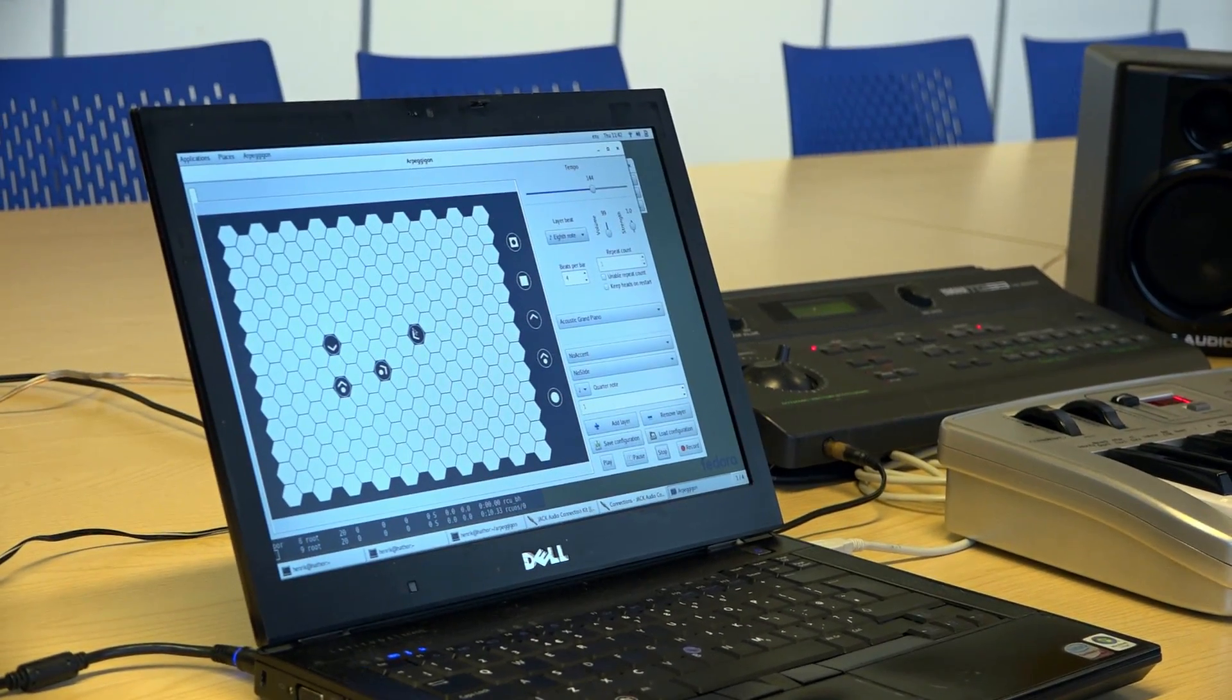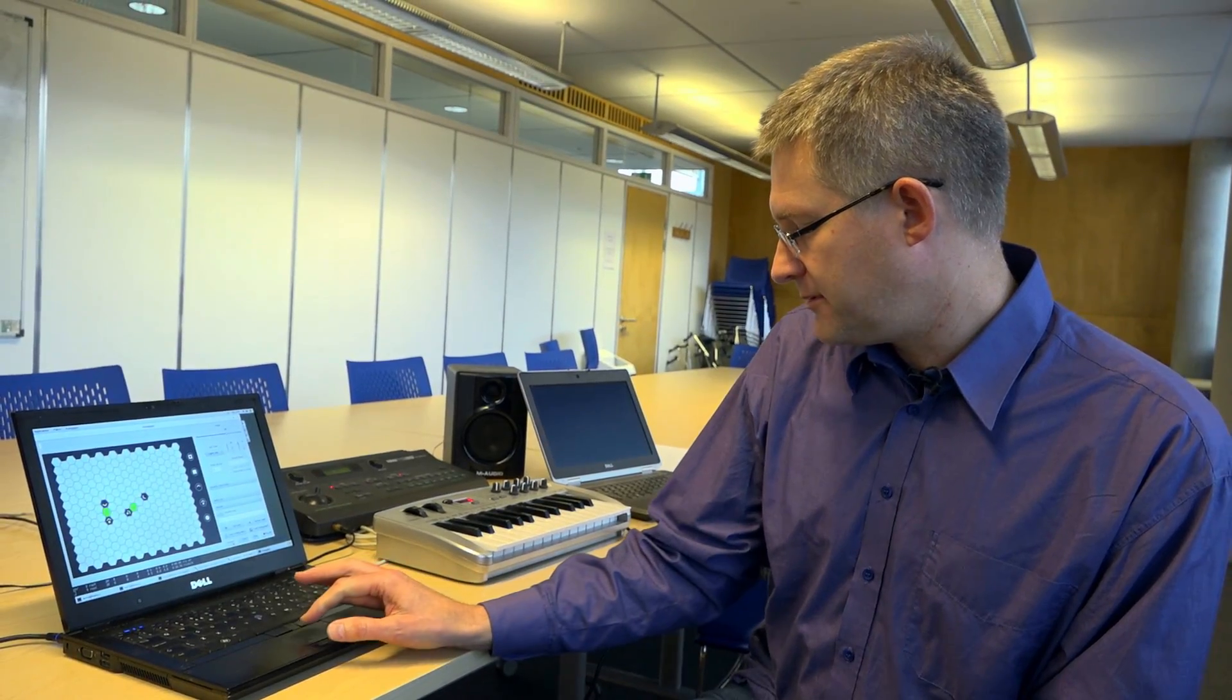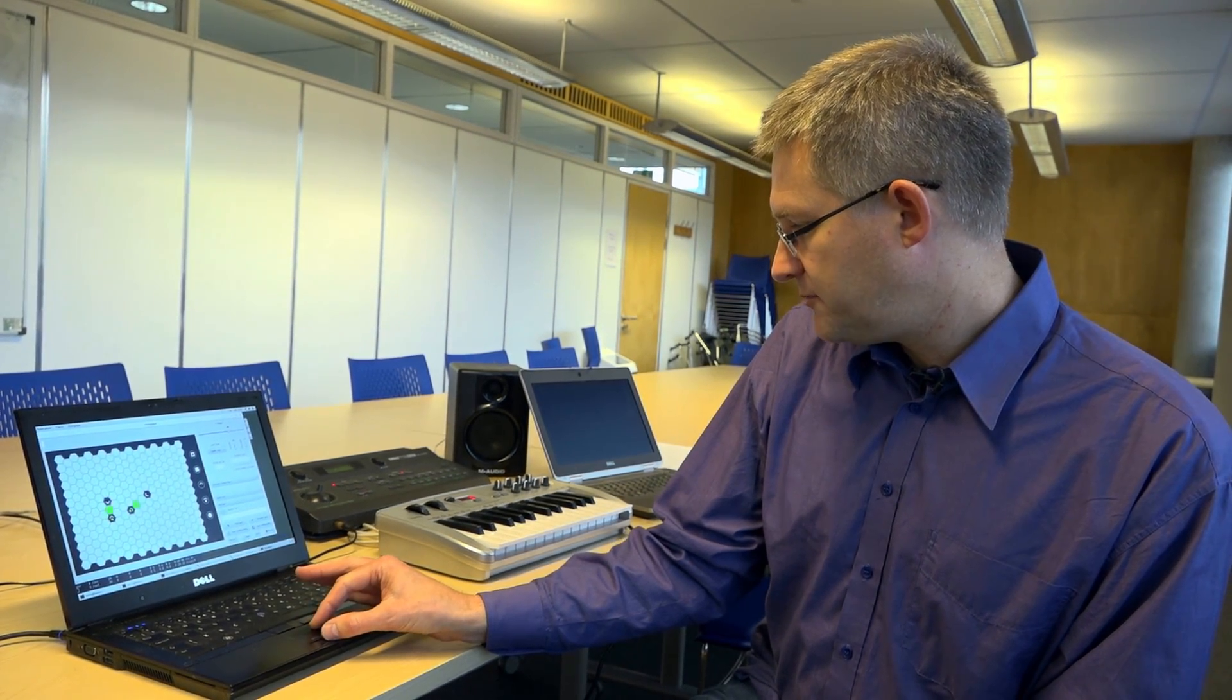We have an application here. It's called the arpeggigon and it's patterned after something called the reactagon, which is a so-called chain reactive performance arpeggiator. This was implemented using functional programming and more specifically a variation called reactive functional programming that is tailored for doing this kind of interactive applications. So that's one way in which we can write games or animations or music applications in a functional language.